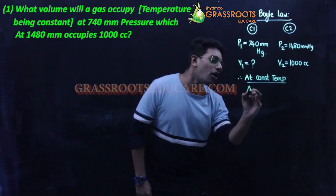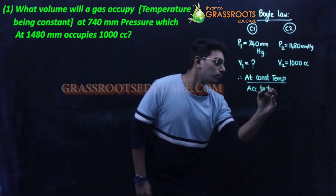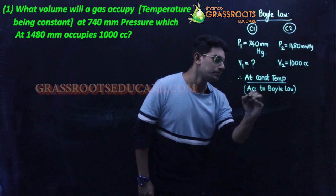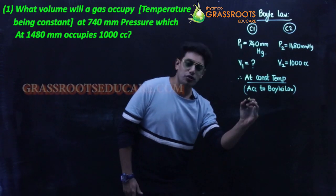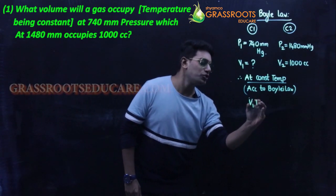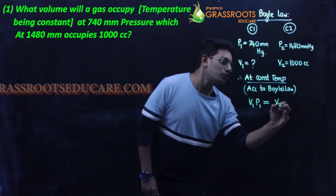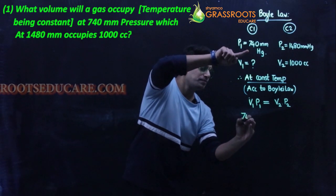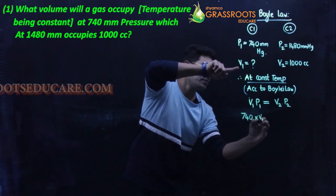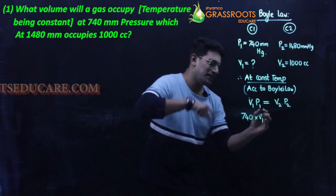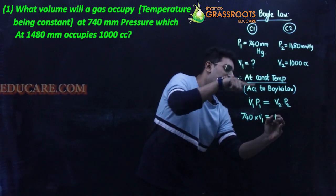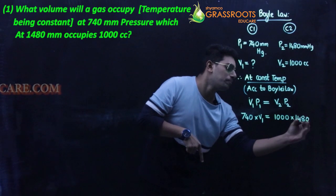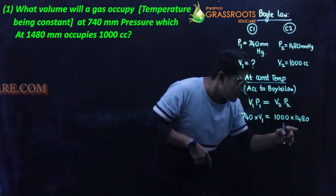At constant temperature, according to Boyle's law, the formula is V1 × P1 = V2 × P2. Substituting: 740 × V1 = 1000 × 1480.